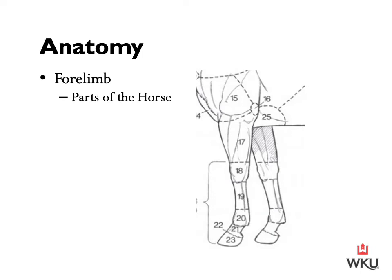Now we're ready to move on to forelimb anatomy regarding parts of the horse. Starting at the bottom at number 23, we have the horse's hoof. Moving up to number 22, this is the coronet or coronary band. At number 21 we have the pastern. At number 20 we have the fetlock. At number 19 we have the cannon. Number 18 is the knee. Number 17 is the forearm. Those are the parts of the forelimb you'll need to identify: hoof, coronet or coronary band, pastern, fetlock, cannon, knee, and forearm.